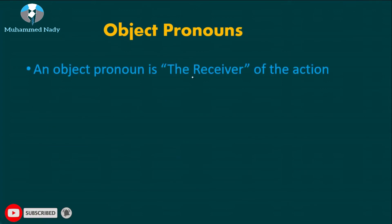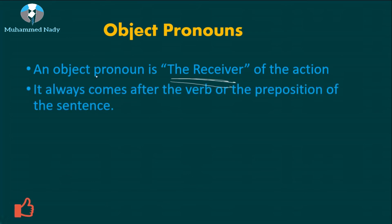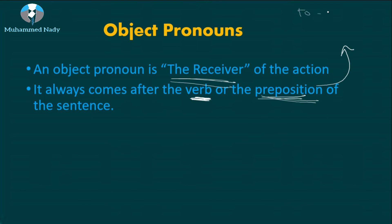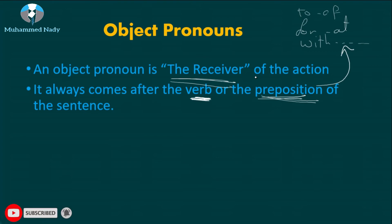Now let's move to the object pronoun. An object pronoun is the receiver of the action — it is something that the action happens to. It always comes after the verb or after a preposition. Some common prepositions are: to, of, for, at, with, etc. So after the verb or after a preposition, if you find a pronoun, that pronoun is an object pronoun.